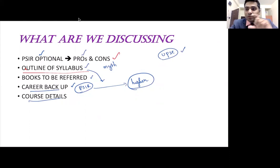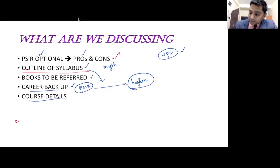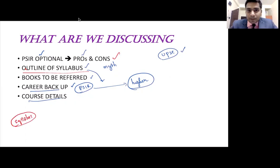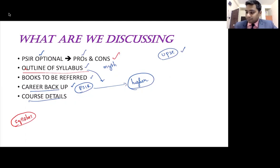I want you to be thorough with the syllabus — this is the first requirement. Being thorough doesn't mean you need to memorize half the syllabus; try to understand it in a very sophisticated and clear manner. Section A in Paper One contains Political Theory.